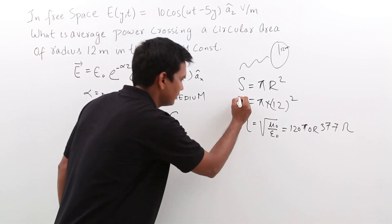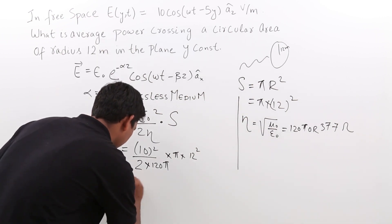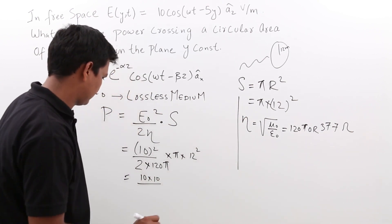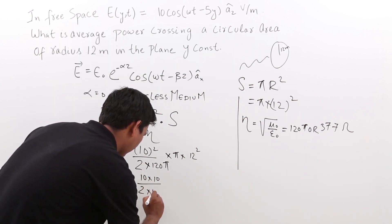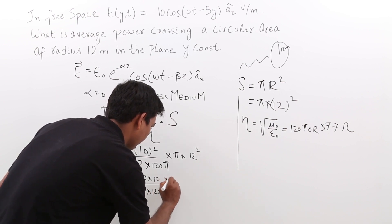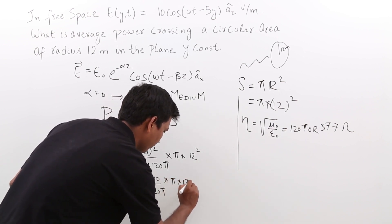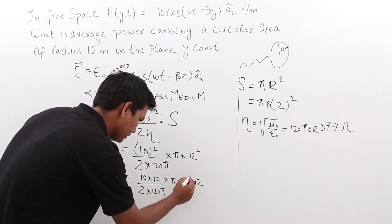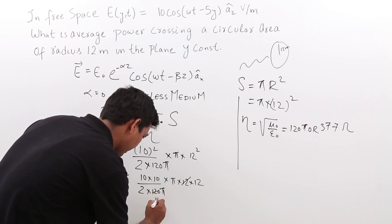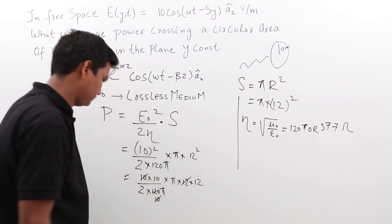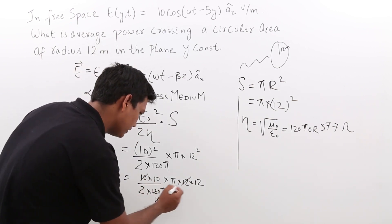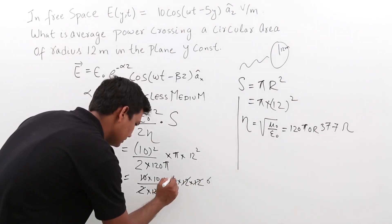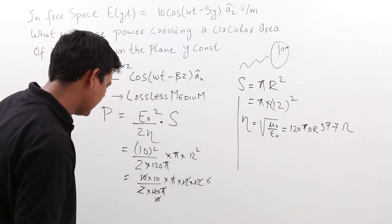If I simplify this, this will go. So, this will become 10, this 10 will go. So, if I simplify this, this is 10. Now, this will become 6. And π will get cancelled. So, this will be nothing but 60.